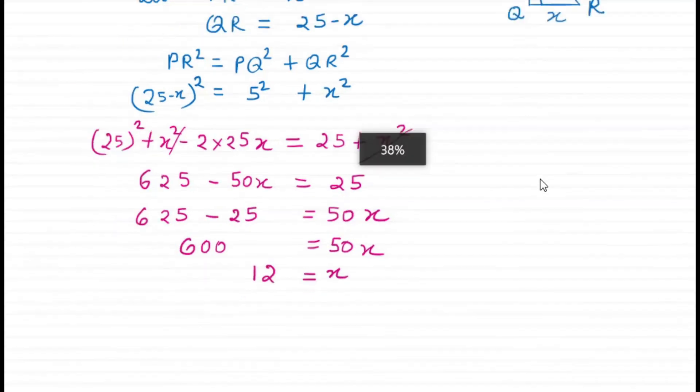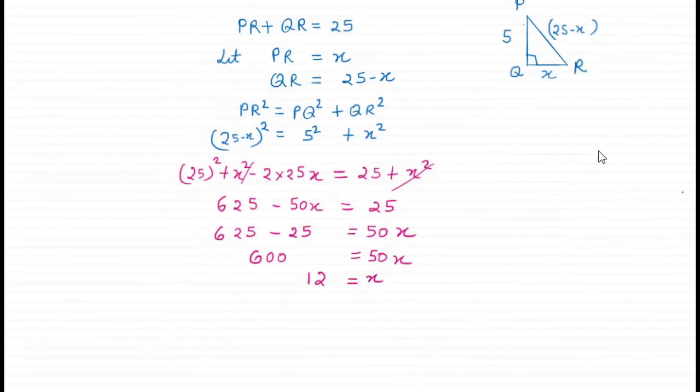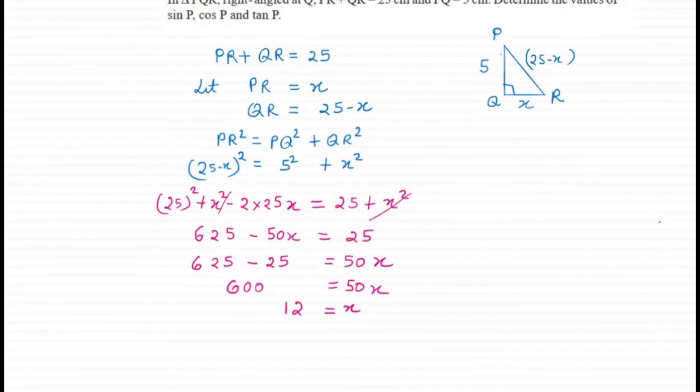In this triangle, we got x equals 12, so this side is 12. The other side will be 25 minus 12, which is 13. We got both sides.